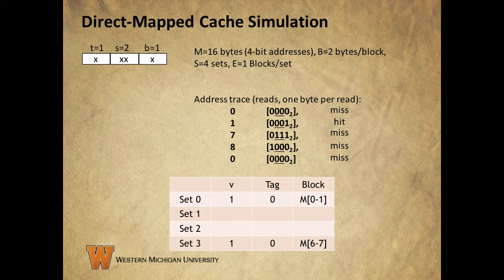Last, we look for byte 0 from main memory and get another conflict miss. The set is set 0, the valid bit is set but the tag is 1 and not 0, so we evict the old data and load bytes 0 and 1 back into the block. Take your time and replay this example if you need to — understanding how hits and misses happen from an address trace is an important thing to understand.